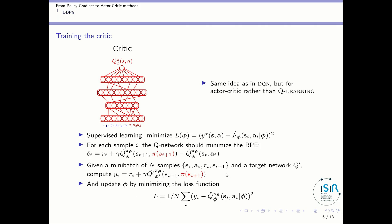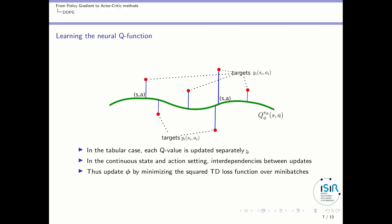To compute this target value, you take a mini-batch of n samples containing the current state, current action, reward, and next state. A target network is used — I will explain this shortly. You compute the target values from those samples, and once you have them, you update the critic parameters by minimizing the loss function corresponding to the squared distance between the target value and the network output. This is similar to Deep Q-Network but uses a slightly different equation for computing the target value.